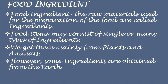Food ingredients are the raw materials used for the preparation of food. Food items may consist of single or many types of ingredients. A basic food dish such as boiled rice is made by boiling rice in water — just two ingredients. Vegetable biryani, on the other hand, is made up of rice, water, various vegetables, salt, several spices, and vegetable oil. We get most ingredients from plants and animals, though some like salt and water are obtained from the earth.